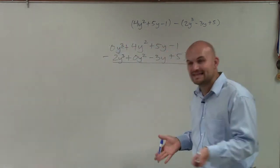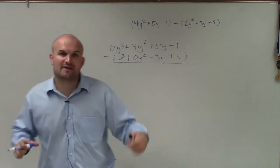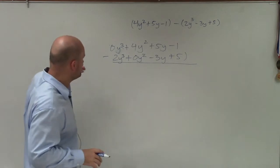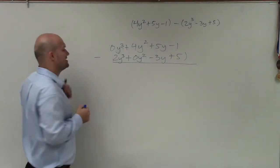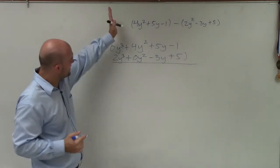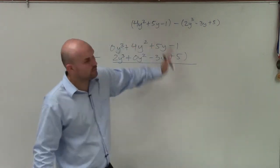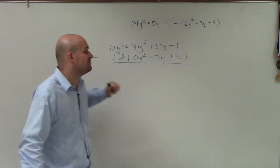Now you don't have to put those zeros in there, but I like to use them as a place value, especially when I'm rewriting this expression to make sure I understand exactly what I'm doing. So now you can see that each variable is aligned with its like term, the term that has the same variable factors.